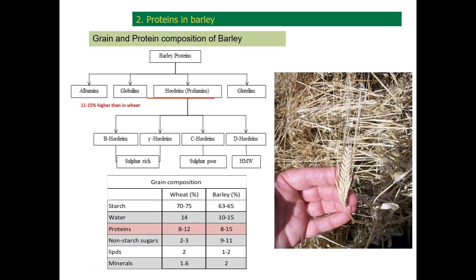Barley grain contains about 65% starch, between 10-15% water, and from 9-13% proteins with other small constituents. Similarly to wheat, proteins in barley are divided into the same four protein groups: albumins, globulins, prolamins and glutelins. The content of non-storage proteins — albumins and globulins — is 11-15% respectively higher than in wheat grains. The non-starchy polysaccharides are about 10% higher as well.